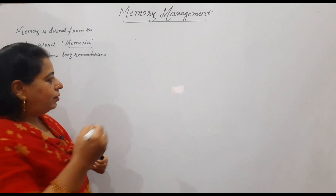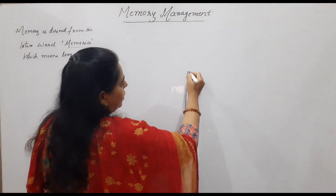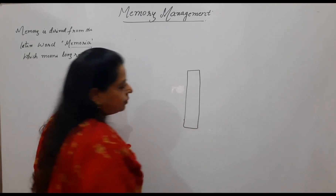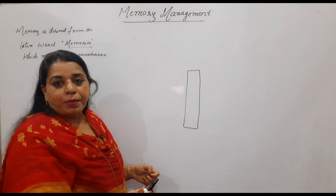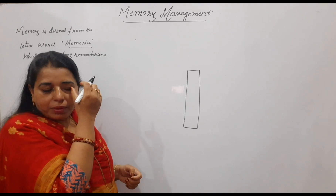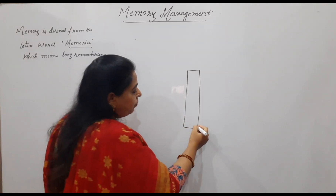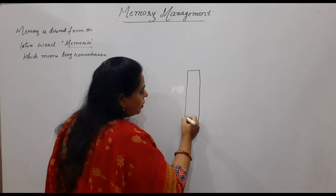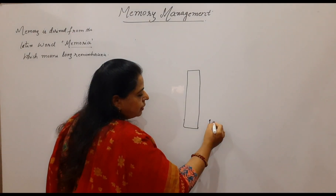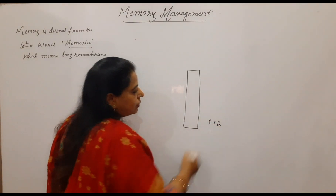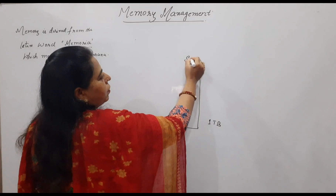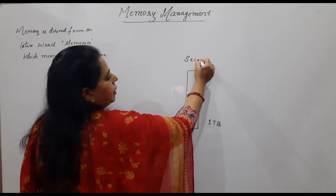Every one of us knows that we are getting a very huge size of memory nowadays. Even in your laptop, the very minimum size for the secondary memory or the hard disk which we are getting is 1TB nowadays. So this 1TB of memory is what we call secondary memory.